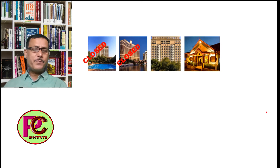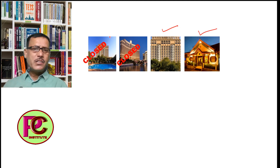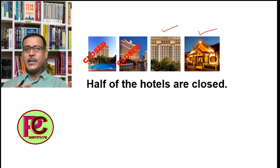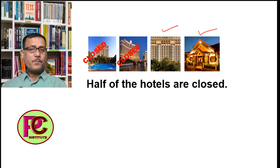Now let's look at some picture-based examples. Here in the picture there is a hotel — it is closed. Another hotel — also closed. Two hotels are open. So there are four hotels in total, and two out of four are closed. We can say 'half of the hotels' — so the noun that follows is countable and plural, because there are four hotels.